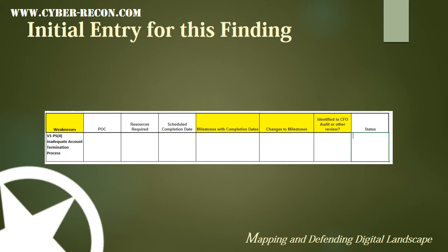As we start our entry, we see the eight column headings identified in OMB M-02-01. The yellow color indicates those columns that the memorandum has specified to be locked. Obviously, we see the changes to milestone column is indicated as yellow, and a case that I think should actually be changed is that the scheduled completion date should also be yellow. But in this case, we will leave them as they are as we fill out the initial line of the POAM.